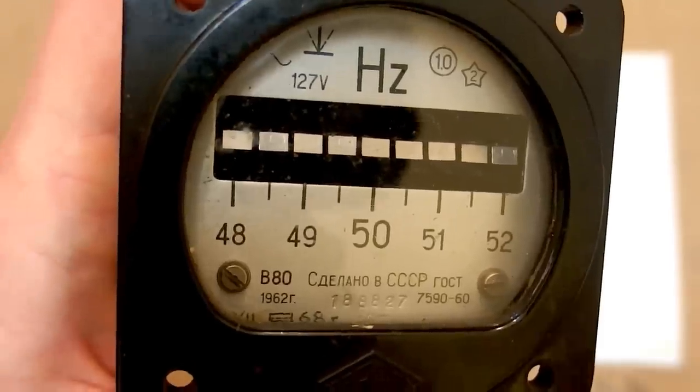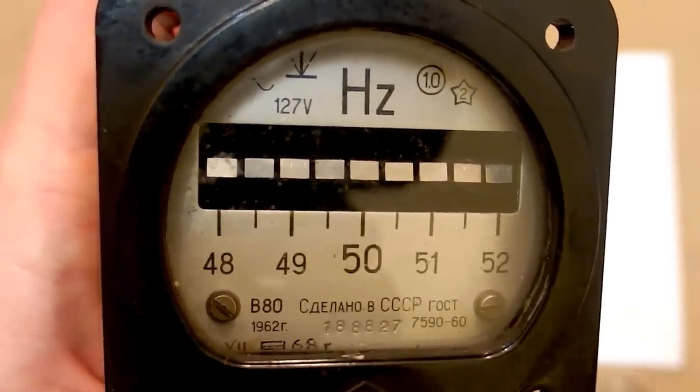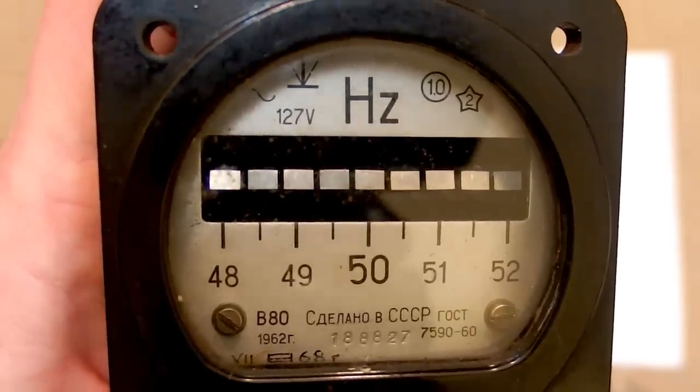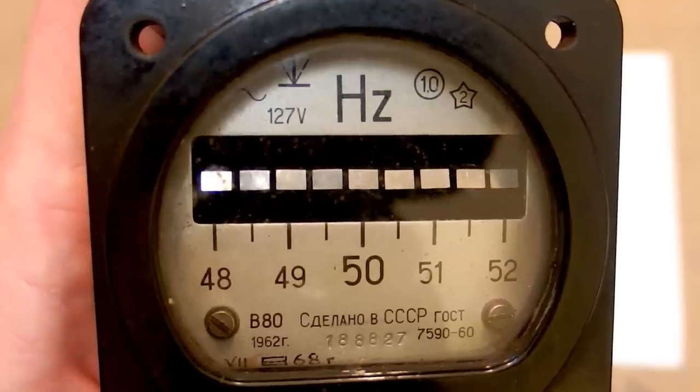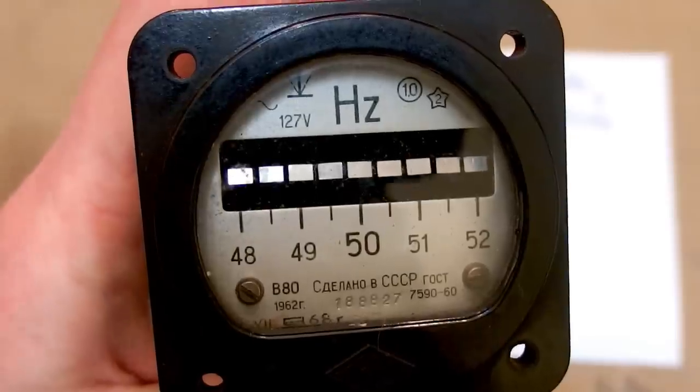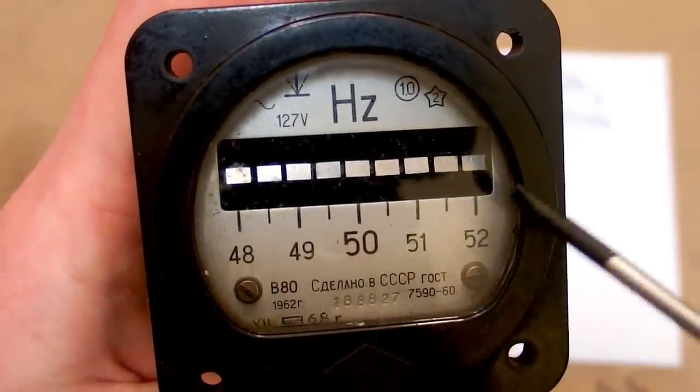Maybe it was used to measure a frequency of a generator which is not connected to mains, an offline generator, or maybe it was measuring the frequency of the generator before connecting it to the mains or maybe the mains frequency was quite inaccurate back then. Maybe in the 60s in Soviet Union the frequency was fluctuating like crazy.